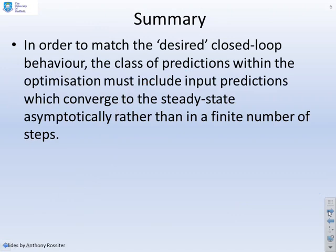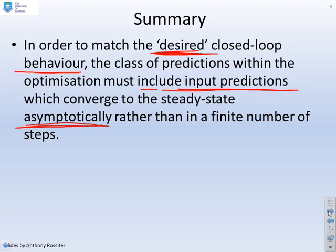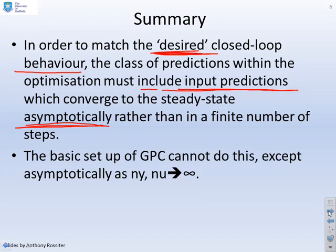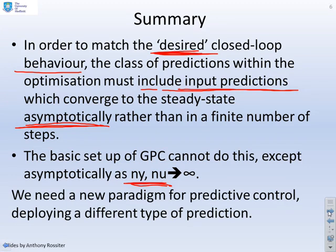In summary, in order to match the desired closed-loop behaviour, the class of predictions within your optimisation must include input predictions which only converge to the steady state asymptotically — they don't reach the steady state in a finite number of steps. The basic setup of GPC cannot do this, except when you let NY and NU tend to infinity, which you won't want to do for various reasons. So we need a new paradigm for predictive control which allows predictions that converge asymptotically.